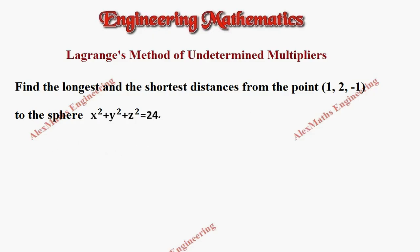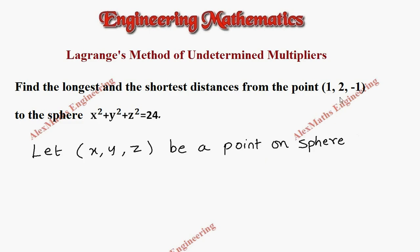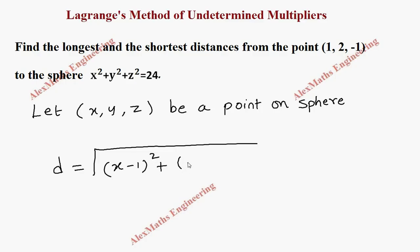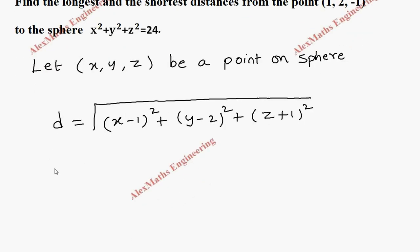Let us take a point on the sphere as (x, y, z). We are going to find the distance between this point and any point on the sphere using the distance formula: (x−1)² + (y−2)² + (z+1)², and let's take the square of this distance.